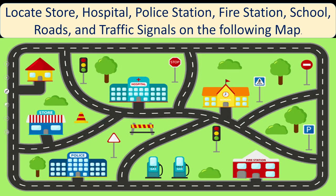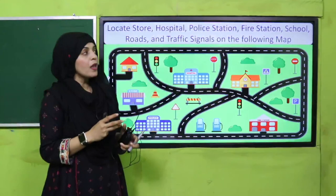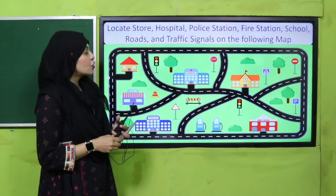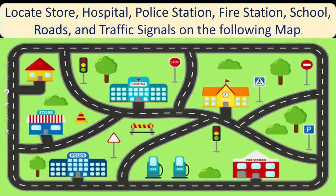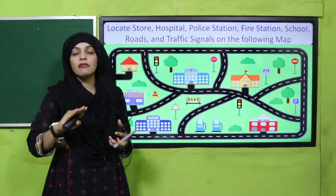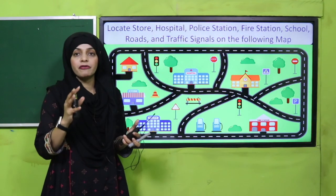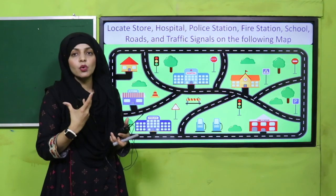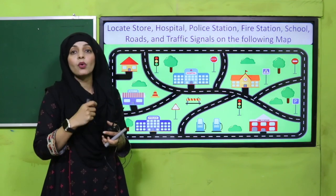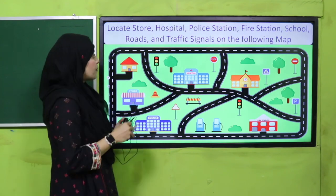On this community map, you need to locate the store, hospital, police station, fire station, school, roads, and traffic signals. From previous grades — one, two, three, four onwards — you have been studying different maps, pictorial maps, and you have also drawn maps yourself.